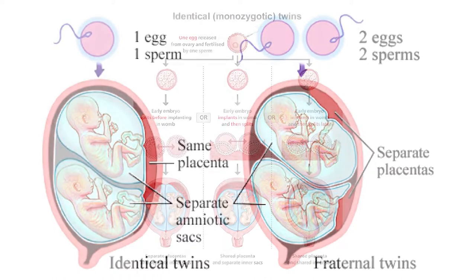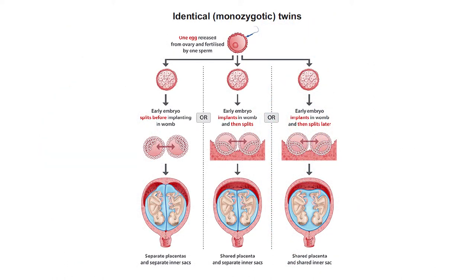In the case of identical twins, a single egg is fertilized by a single sperm and it splits, resulting in multiple identical embryos. This type of pregnancy results in identical twins, called monozygotic twins. Identical twins are less common compared to dizygotic babies. These babies will be of the same sex and will have identical genes.